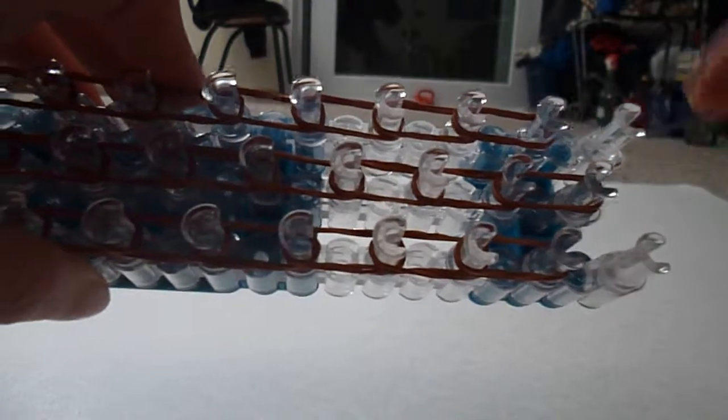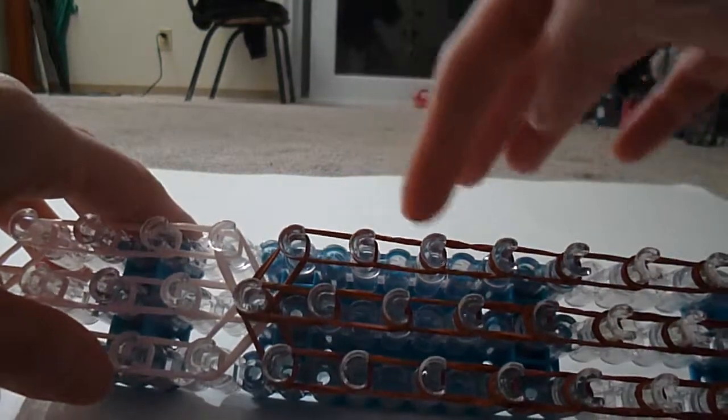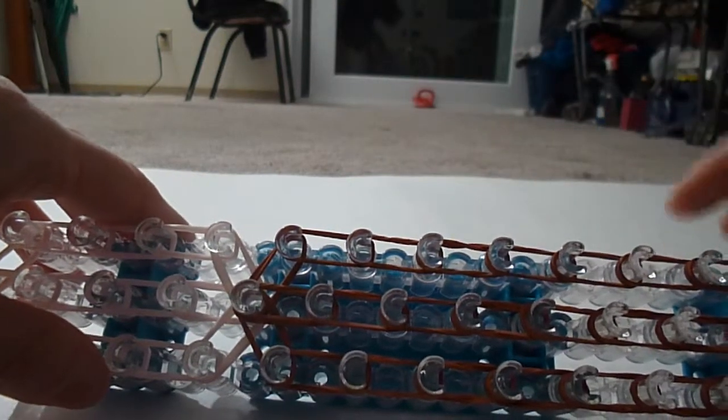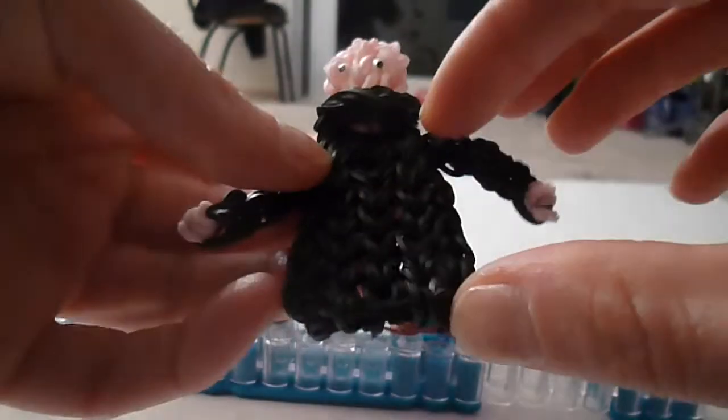When you're ready, you can come back with your loom in the offset configuration, middle row raised above the other two. And before you put anything on, let me tell you, right now we have three, four, five, six, seven sets on our outfit length.